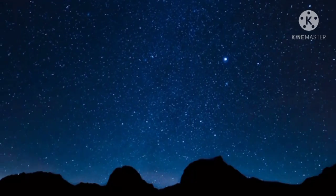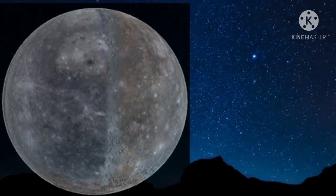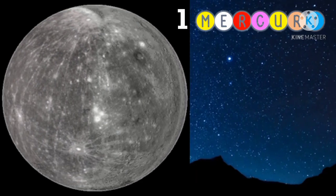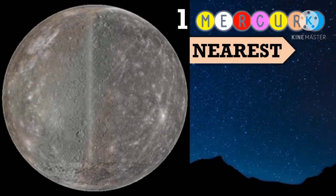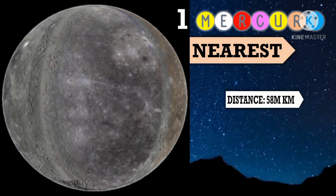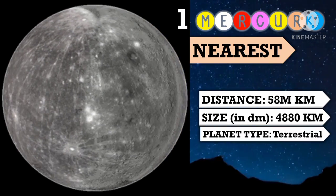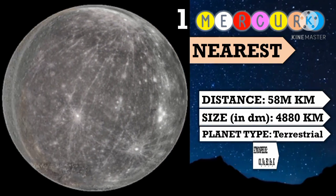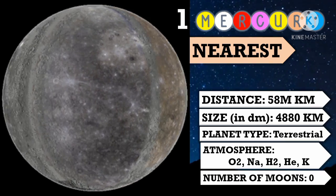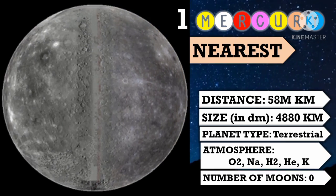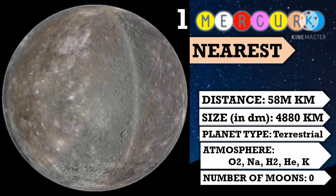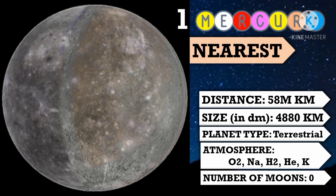The first planet is Mercury. Mercury is the nearest planet to the sun. Mercury is a terrestrial planet composed mainly of sodium, oxygen, hydrogen, helium, and potassium. Mercury has no moon or rings around it.